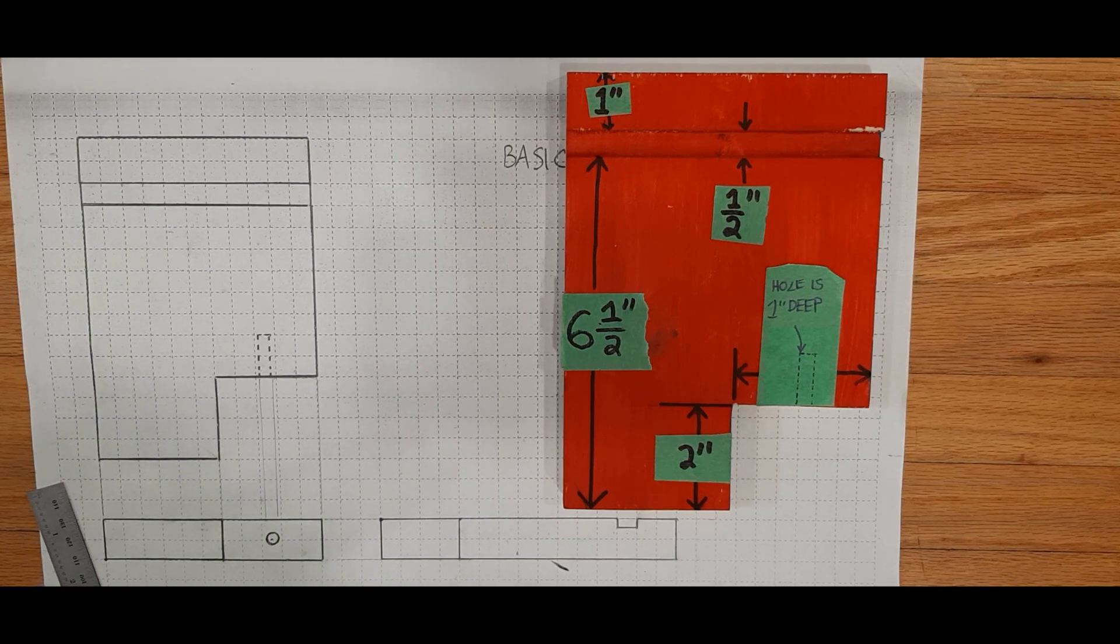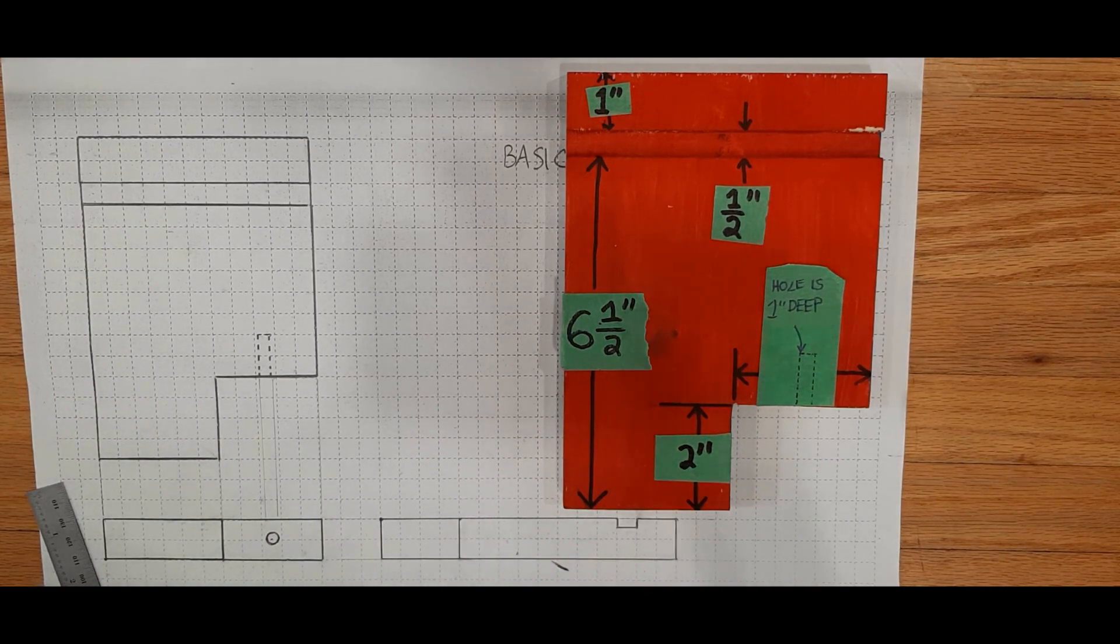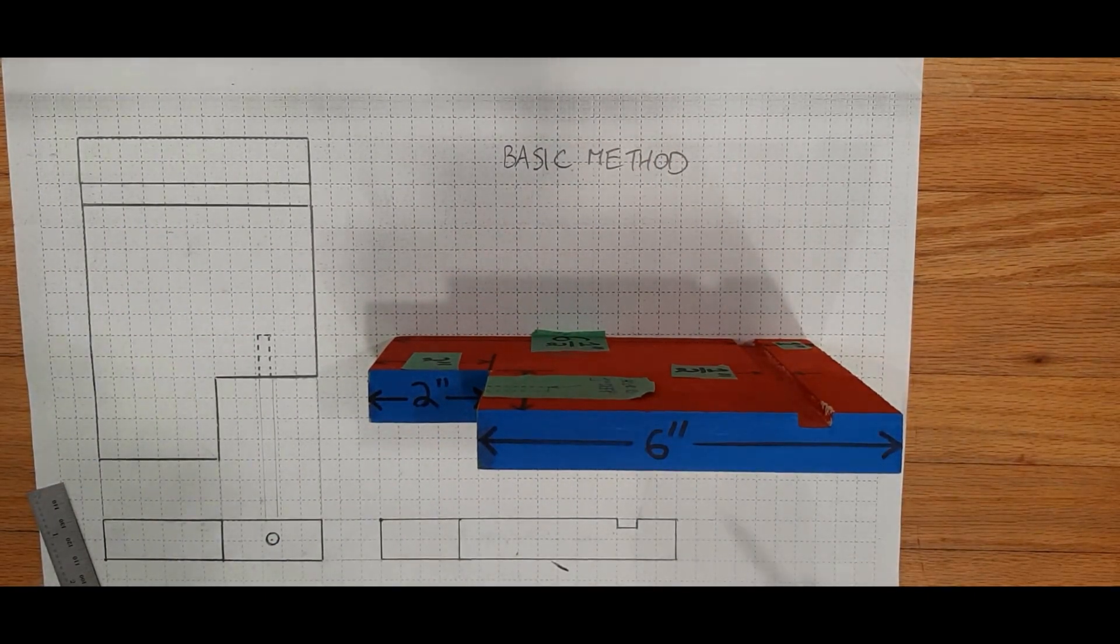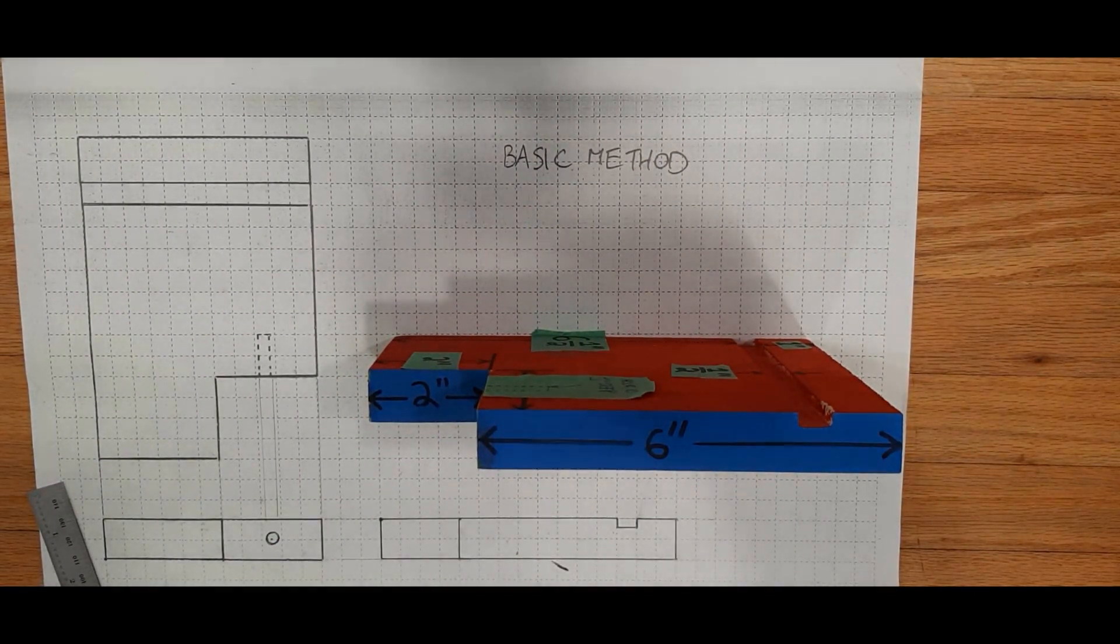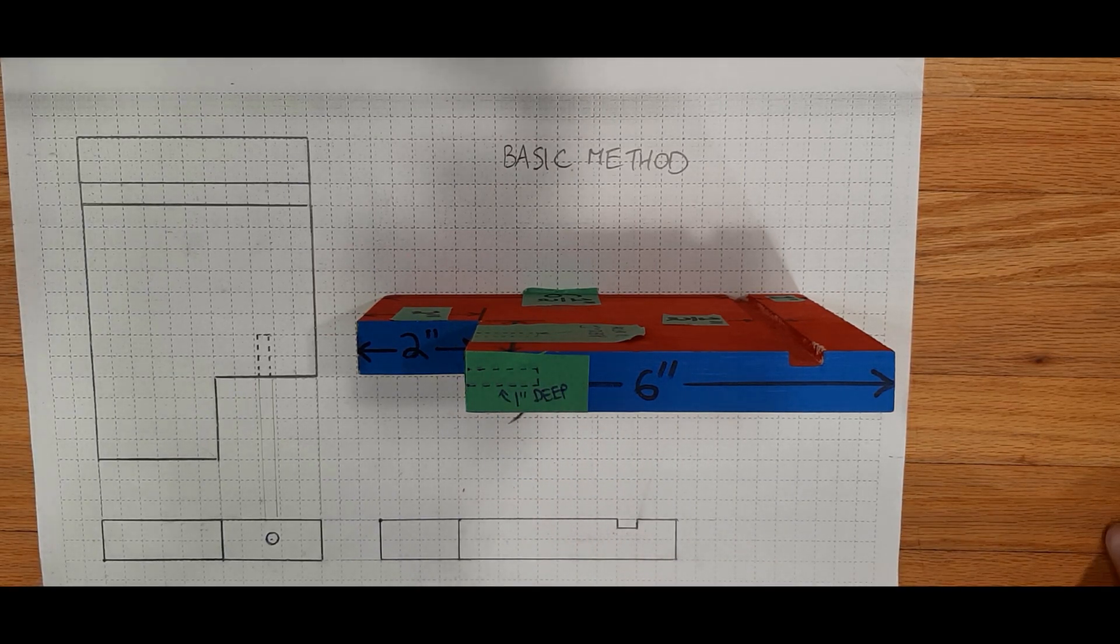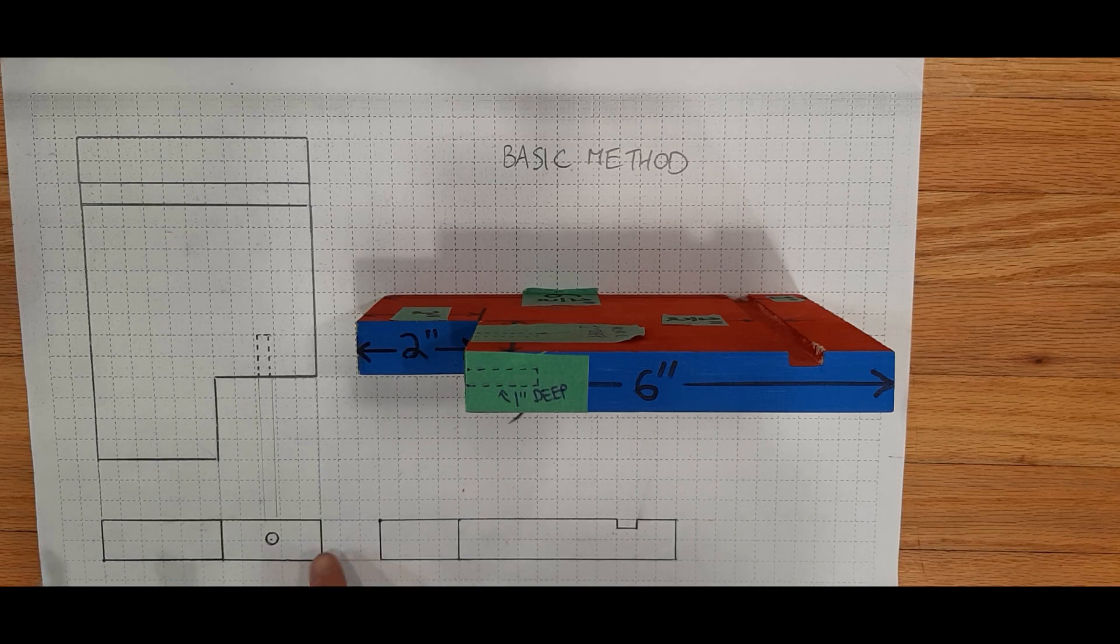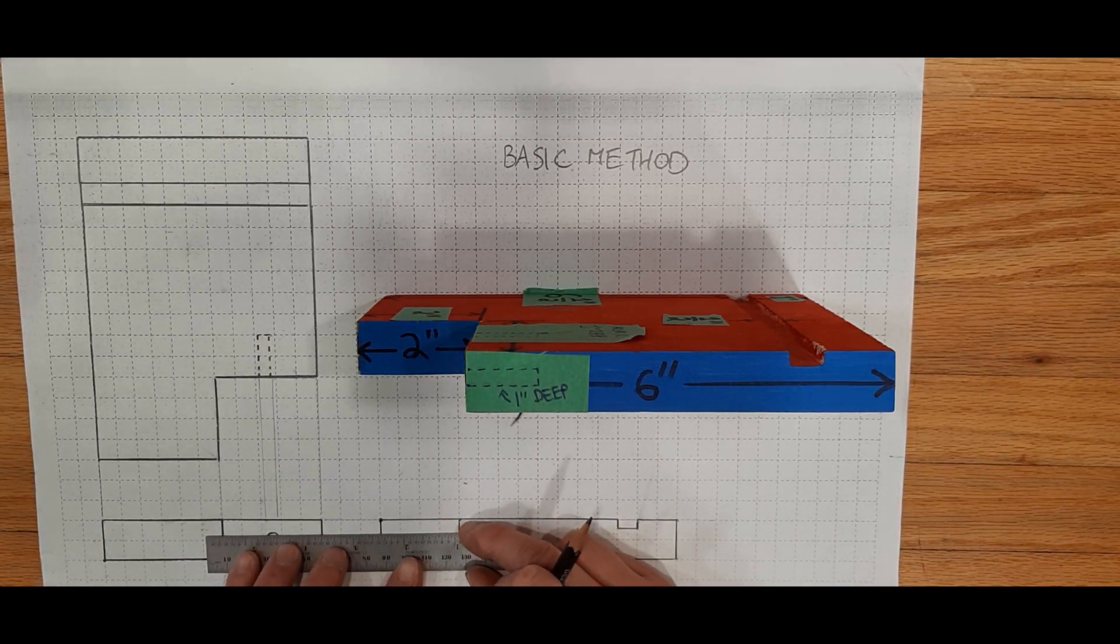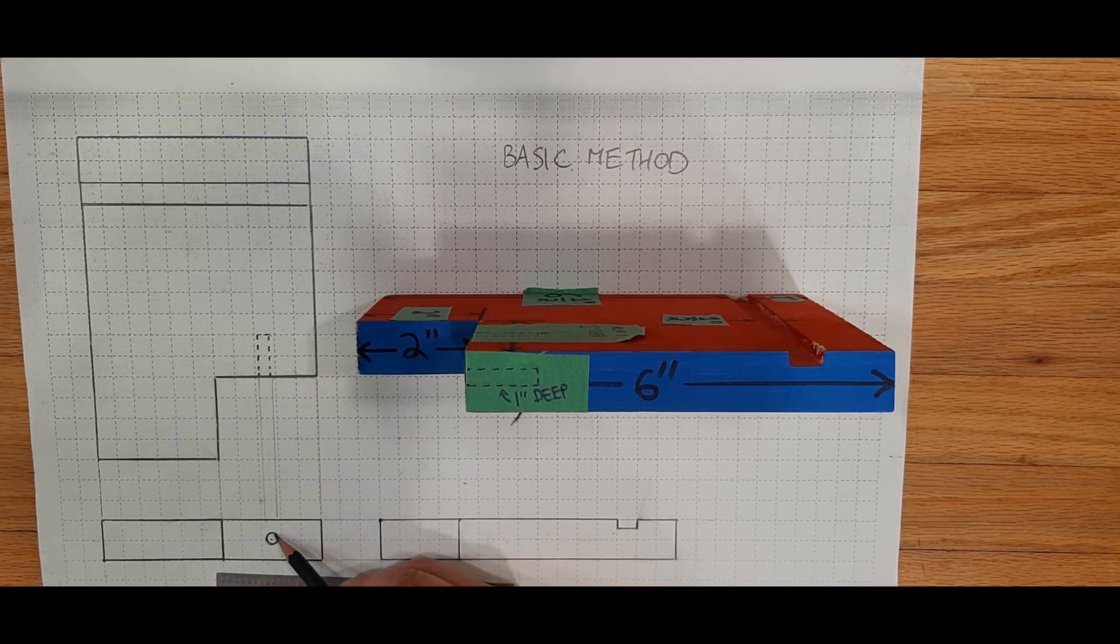Now we're going to need to do the same thing for the right view. So once again, let's pretend that we've got x-ray vision. This is what we would see. It is one inch deep. So again, to draw the hidden lines on our right view, start by drawing your projection lines. This time, start at the top of the hole in your front view.